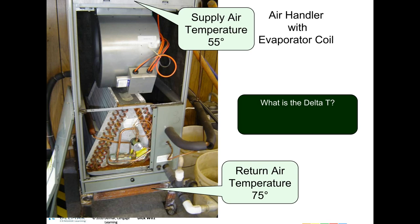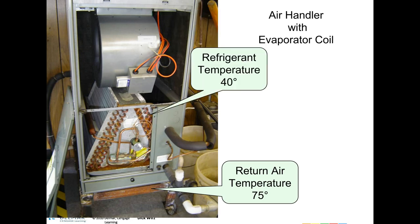Let's first review the Delta T and then we can see the differences. On a residential system, with a return air temperature of 75 degrees and a supply air temperature of 55 degrees, your Delta T is 20 degrees. Now for TD: you take the same return air temperature of 75 degrees, hook up your gauges, and find the refrigerant temperature is 40 degrees. The difference is between the return air temperature and the refrigerant temperature itself — not the supply air temperature.